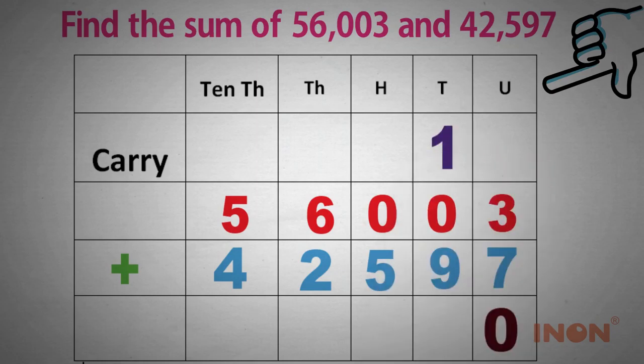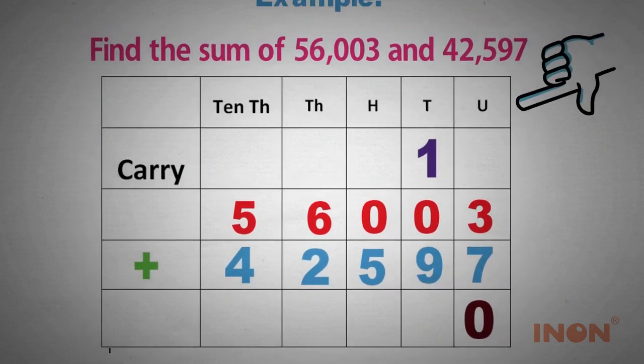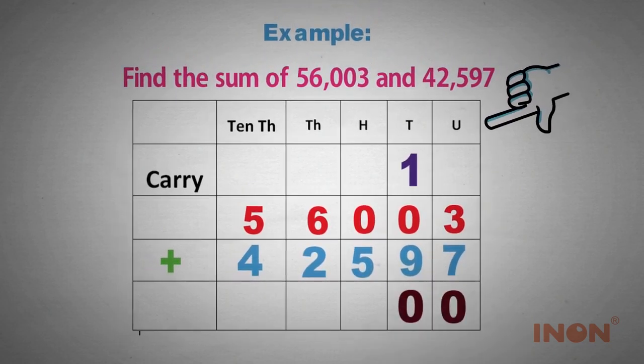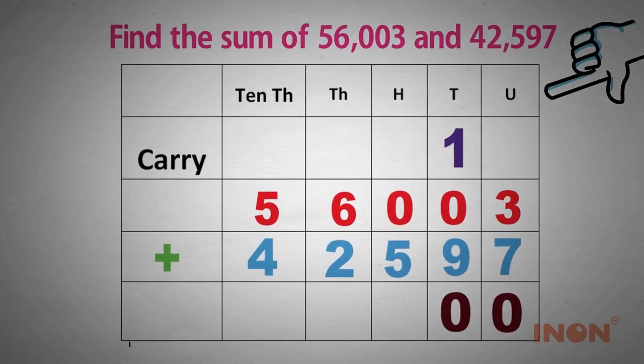Then, in the tens place, we have 0, 9, and the carry which is 1. We get 1 plus 9 is 10. Therefore, 1 is the carry in hundreds and 0 is the answer.